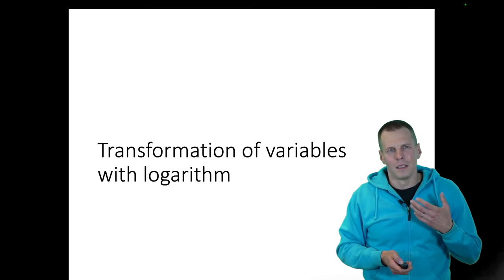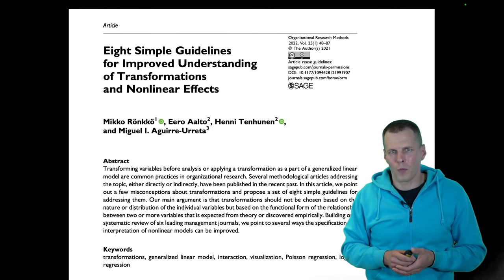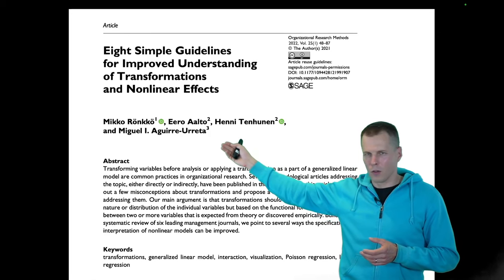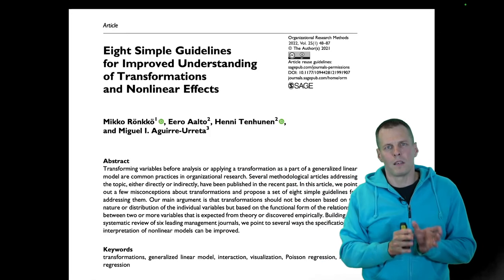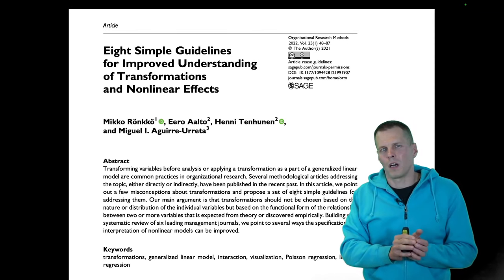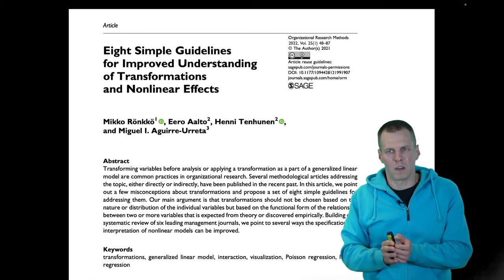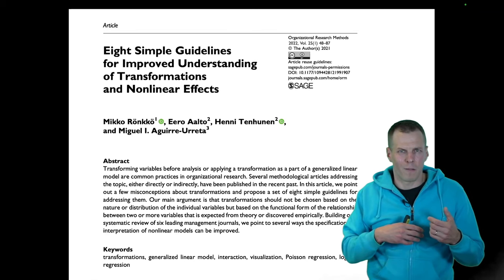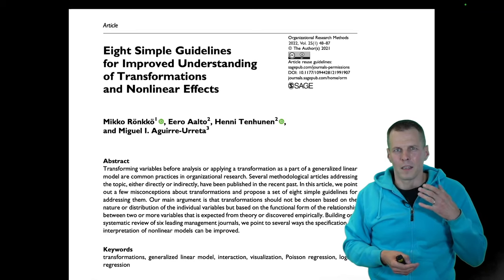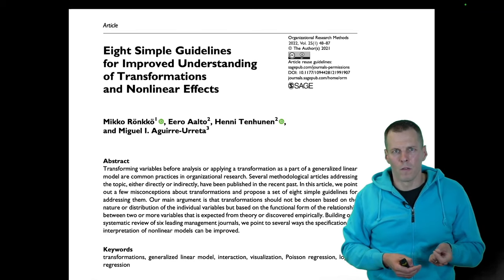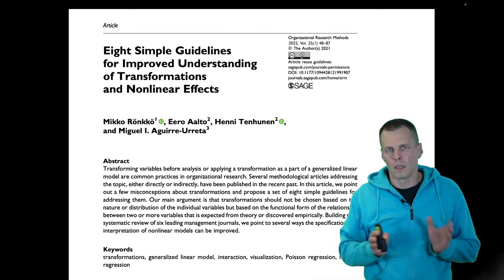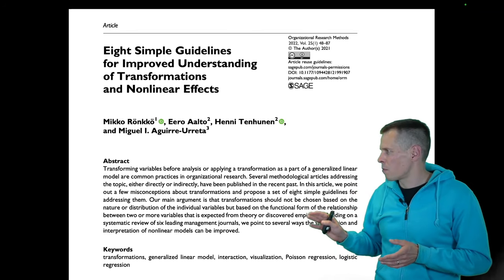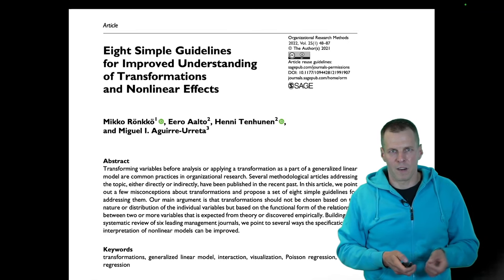I'm familiar with this topic because I wrote a paper about it. Together with two doctoral students — Aaron Henny and my long-time co-author Miguel — we looked at articles from leading management journals and examined how they applied transformations and justified them. We found many problems and created guidelines for researchers. This article was awarded best quantitative paper for organizational research methods in 2022, and it's now mandatory reading in many doctoral programs. If you're in a doctoral program, read this before applying any transformations.